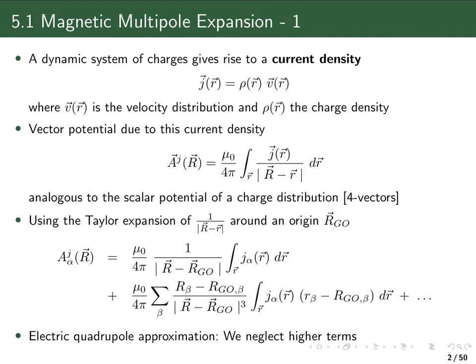The current density, because the velocity is a vector field, is also a vector field. So the property which we are looking at is a vector field, compared to a scalar field which we had in the electric case. Correspondingly, where in the electric case we looked at the electrostatic potential, we now look at the vector potential. The corresponding potential for the magnetic case is also a vector — the vector potential coming from this current density.